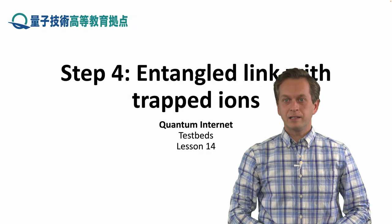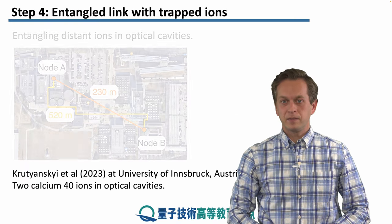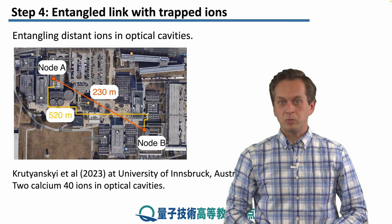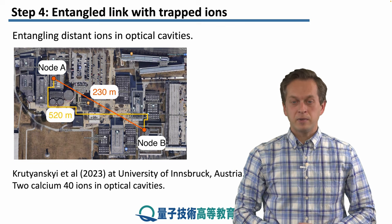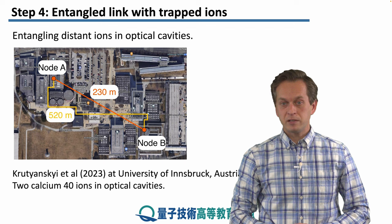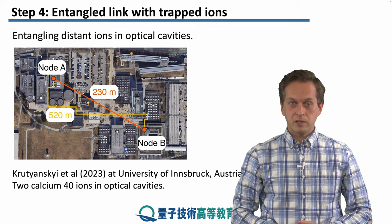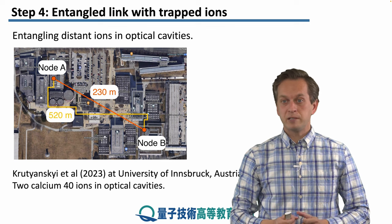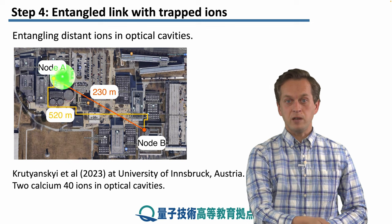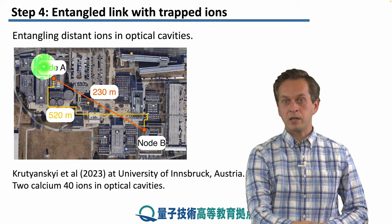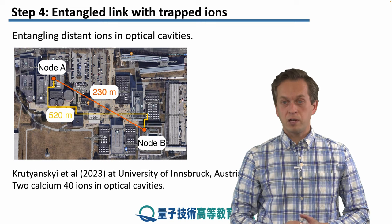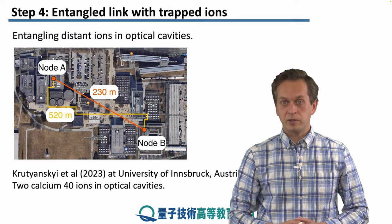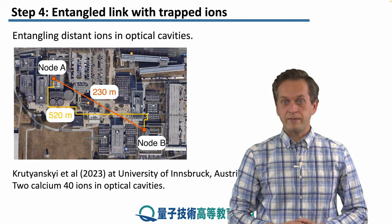Step 4: Entangled link with trapped ions. This experiment used trapped ions in optical cavities to establish an entangled link between node A and node B. It was performed by Kurtyansky and his collaborators in 2023 at the University of Innsbruck in Austria. The ions used were two calcium-40 ions, placed in optical cavities at node A on the campus of Innsbruck University and node B. The separation between the nodes was 230 meters, but the fiber length used to carry photons between the nodes was 520 meters.